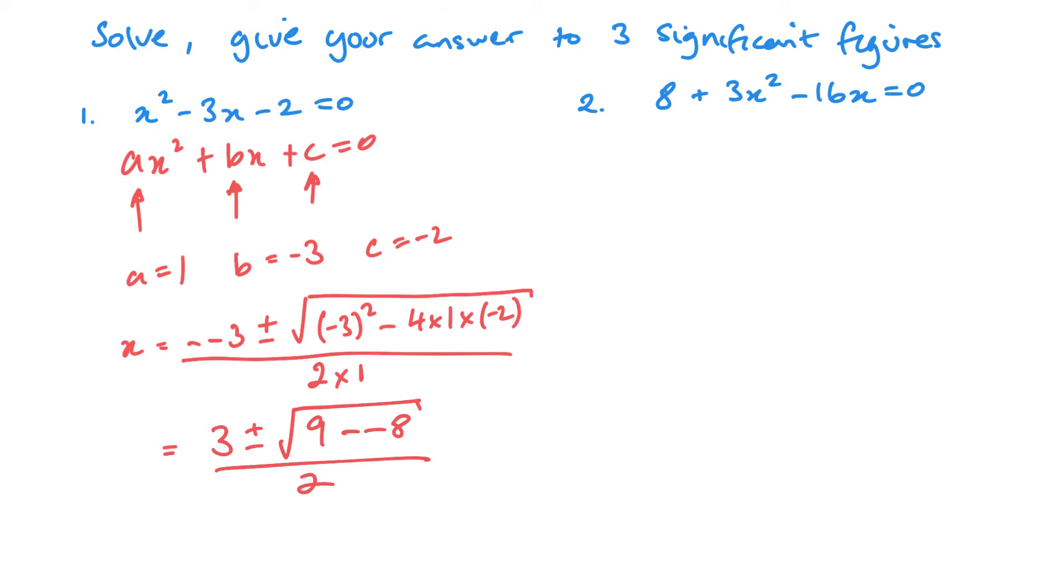So if we look at this now, we've got 3 plus or minus the square root of 17 over 2. And this is my two answers. One when I use the plus and one when I use the minus. So my two values of x are 3 plus root of 17 over 2, or 3 minus root of 17 over 2. And if needed, I can also then find that as a decimal answer as well.